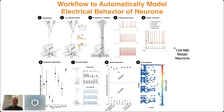Before this approach was developed, it really took three years for an individual PhD student to build a model neuron. Now we can automatically generate hundreds of thousands of model neurons that adhere to and are formed by the data recorded from biological experiments, and they can be tested for quality assurance and generalization to other types of stimuli automatically.